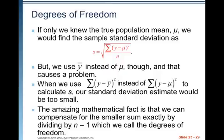If we knew the true population mean mu, we would find the sample standard deviation as s equals the square root of the sum of (y minus mu) squared over n. But we use y-bar instead of mu, and that causes a problem — when we use (y minus y-bar) squared instead, our standard deviation estimate would be too small. The amazing mathematical fact is that we can compensate for this exactly by dividing by n minus 1, which we call the degrees of freedom.